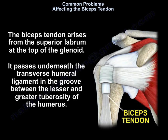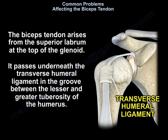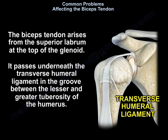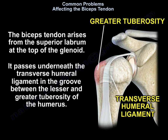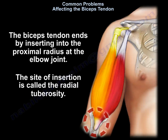The biceps tendon arises from the superior labrum at the top of the glenoid. It passes underneath the transverse humeral ligament in the groove between the lesser and the greater tuberosity of the humerus. The biceps tendon ends by inserting into the proximal radius at the elbow joint, at the site of insertion called the radial tuberosity.